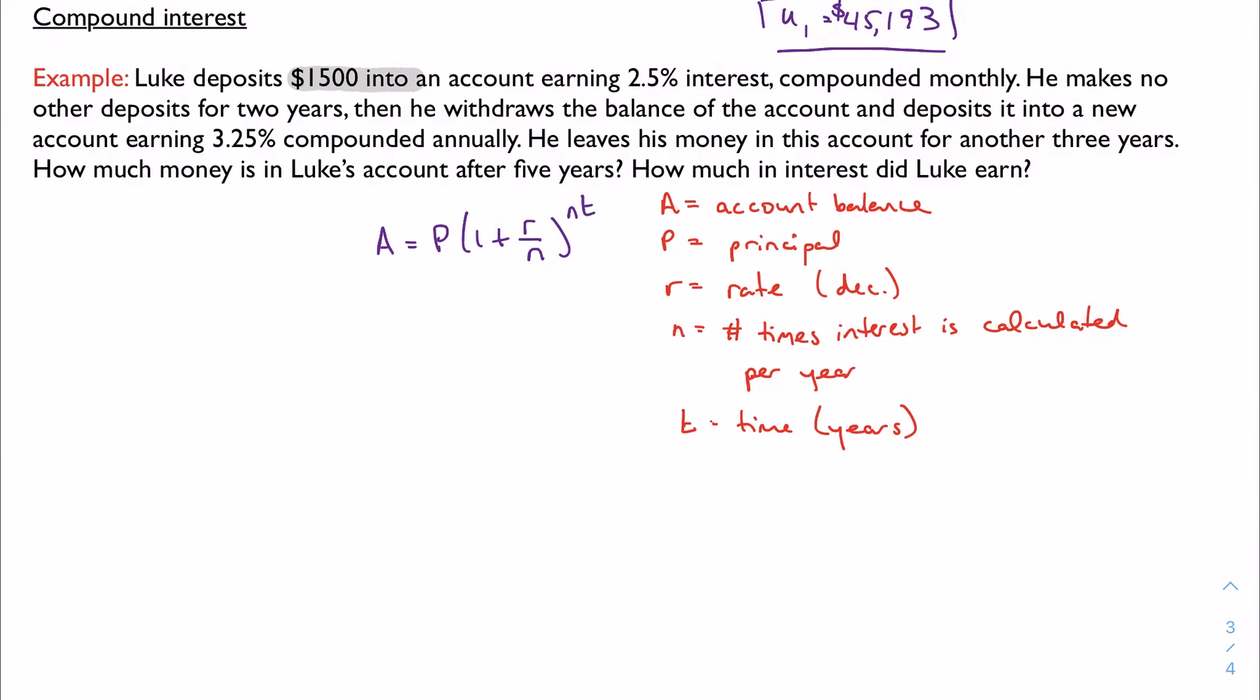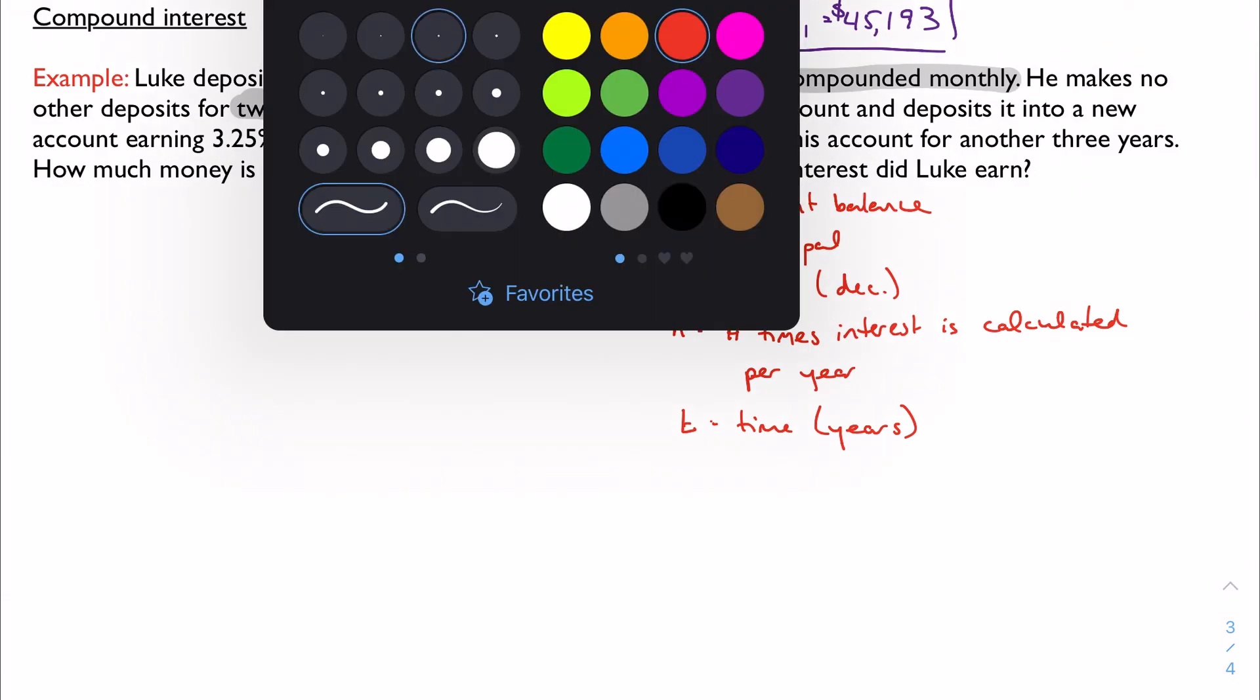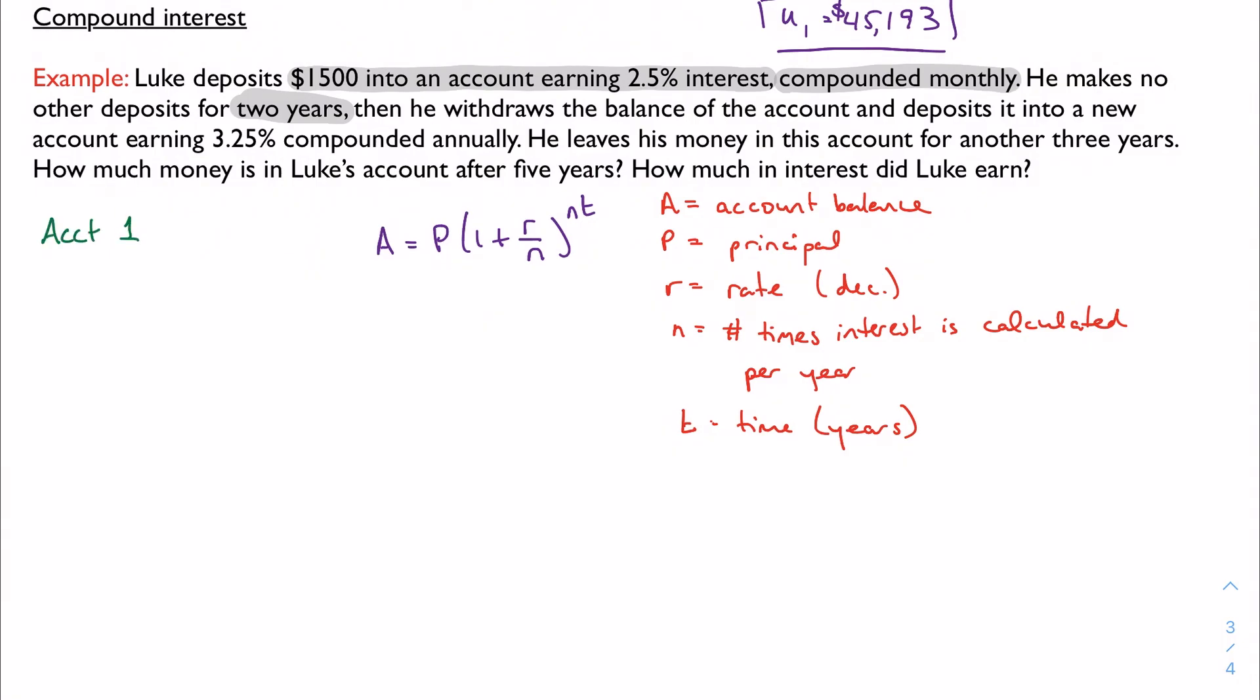Luke deposits $1,500 into an account earning 2.5% interest compounded monthly. He makes no other deposits for two years and then withdraws the balance of the account and deposits it into a new account earning 3.25% compounded annually. If your brain is like mine, your head is spinning. Before we go on to that second account, let's just deal with what's going on in this first account. There's a lot happening here. So account one. $1,500 was put in. We have a 2.5% interest rate. Compounded monthly. And he keeps that for two years. This is a crucial step when the problem seems overwhelming. Pull that important information right out of the paragraph.